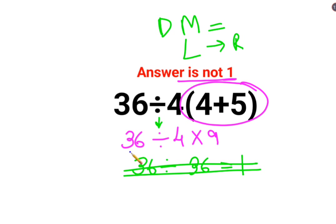So first we do 36 divided by 4, which gets you 9 multiplied by 9. The answer for this question is supposed to be 81.